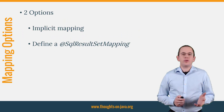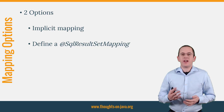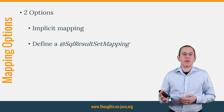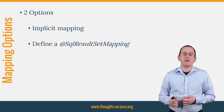You have two options to map the result of a native query that returns all columns mapped by an entity. In the best case, Hibernate already knows all the required information and you can use the implicit mapping. If that's not the case, you can use an SQLResultSetMapping annotation to define your own mapping.